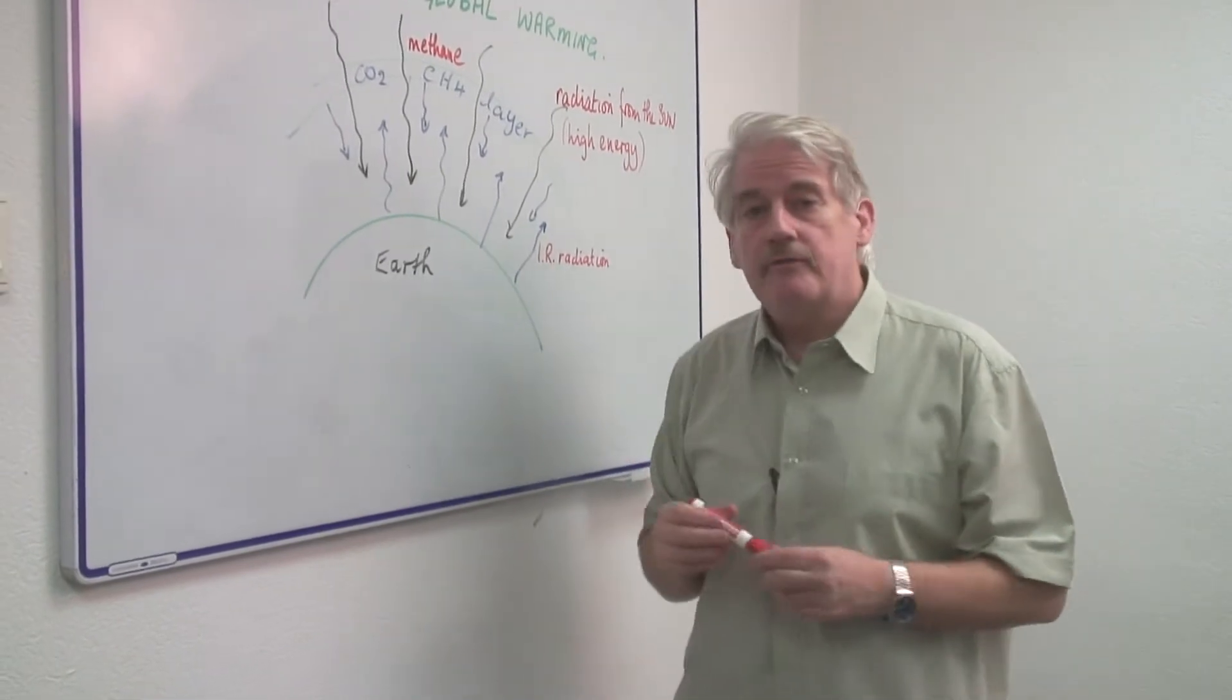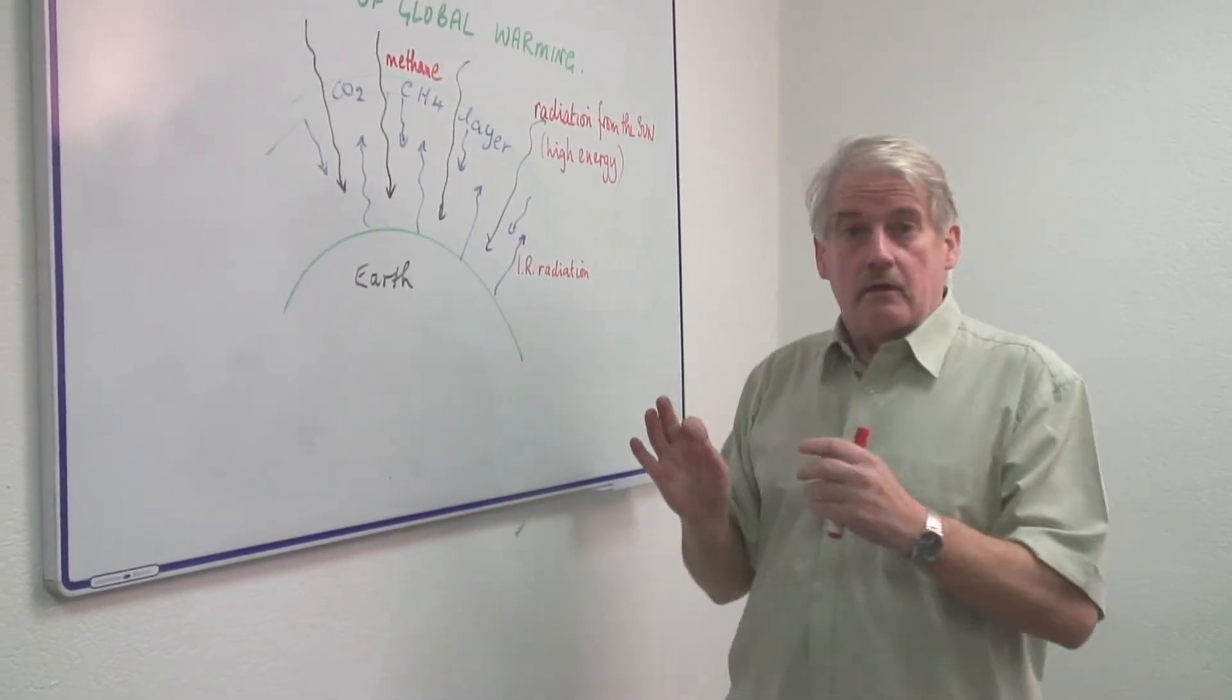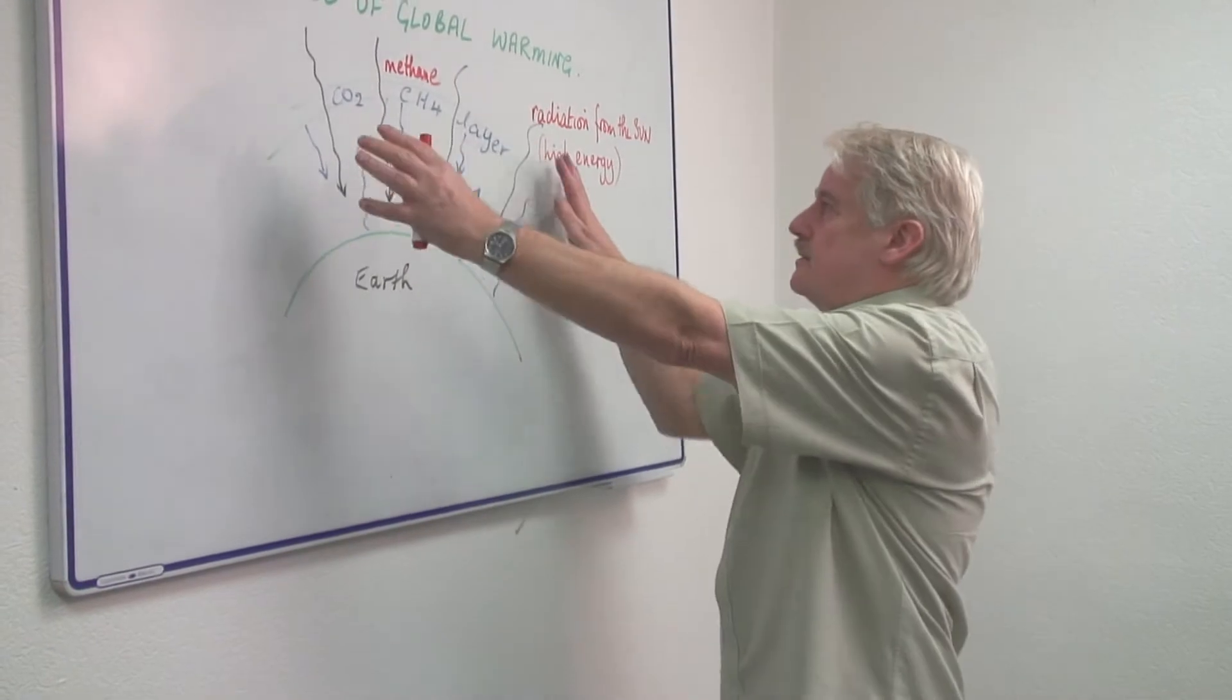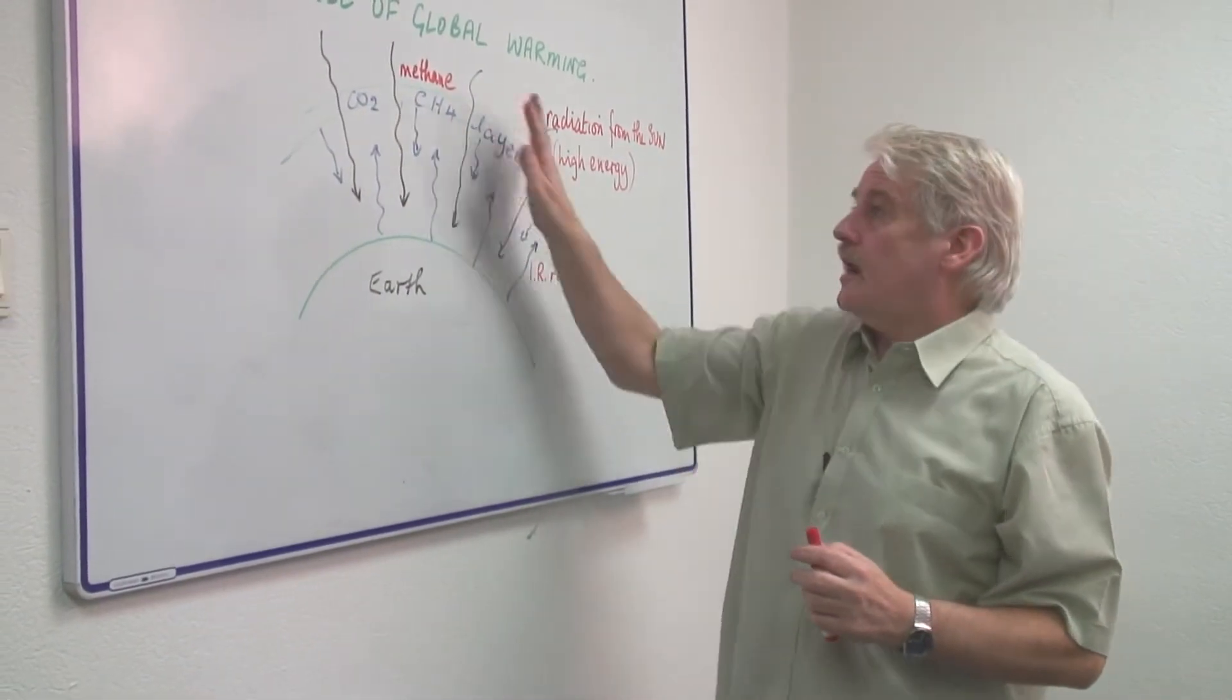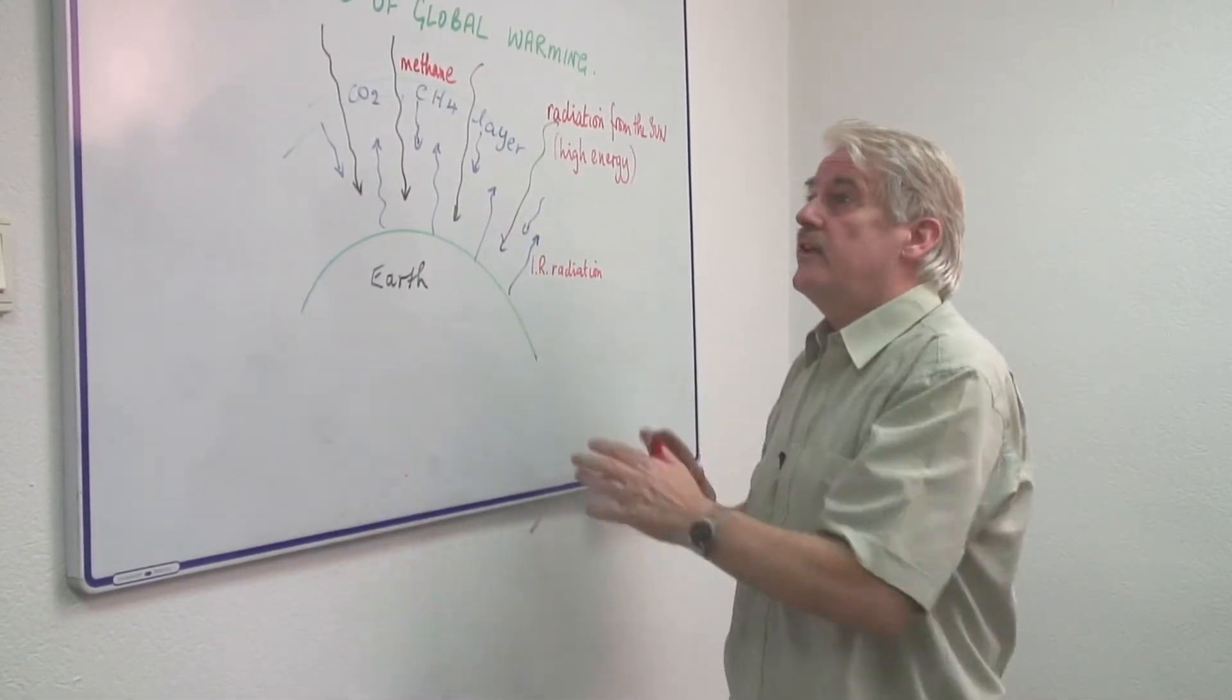A good example of this is Venus. The planet Venus is actually hotter than it should be. It has a very dense layer of methane in its atmosphere which clouds the planet and retains the heat within it.